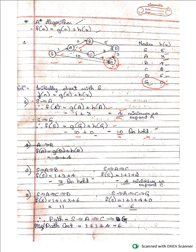For S→A→B: path cost from S to A is 1, A to B is 2, so 1 + 2 + h(B) = 1 + 2 + 4 = 7. For S→A→C: path cost S to A is 1, A to C is 1, plus h(C) = 2, so 1 + 1 + 2 = 4. The minimum is S→A→C with value 4.